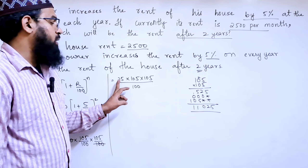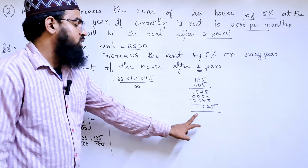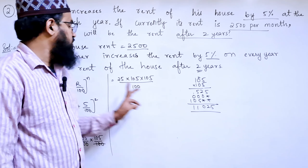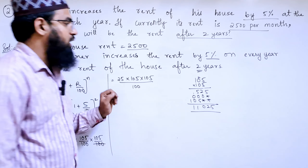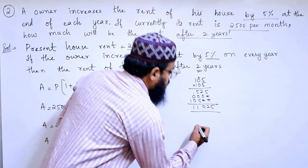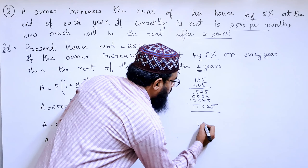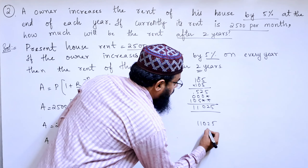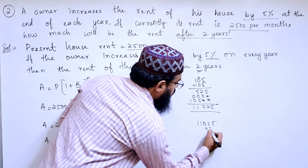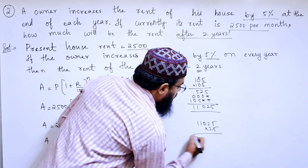Now we will multiply 11,025 with 25. So 11,025 into 25.